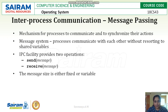The mechanism for processes to communicate and synchronize their actions is through a message system. Processes communicate with each other without resorting to shared variables. The IPC facility provides two operations: send message and receive message. The message size being sent and received is either fixed — the fixed message passing method — or variable, where the size of the message is not fixed.